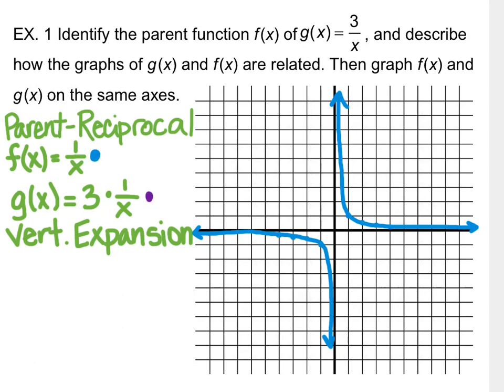Now graphing g(x) = 3/x from the calculator table: x = −4 gives about −0.75; x = −3 gives −1; x = −2 gives −1.5; x = −1 gives −3; error at 0. Then x = 1 gives 3; x = 2 gives 1.5; x = 3 gives 1; x = 4 gives 0.75. Similarly decreasing left to right. Comparing the two, you can see the vertical expansion — the new function pulls away from the y-axis, looking a little wider.